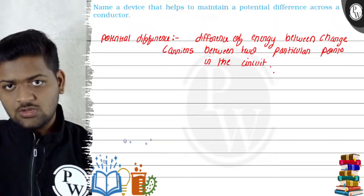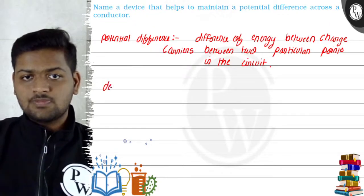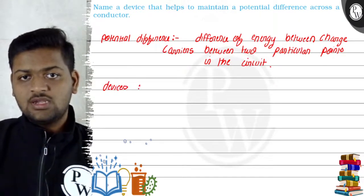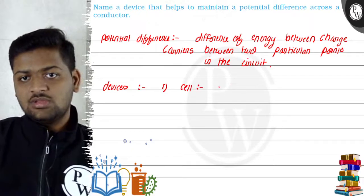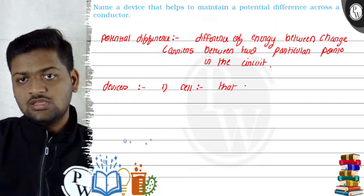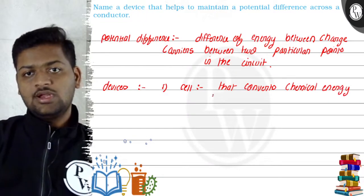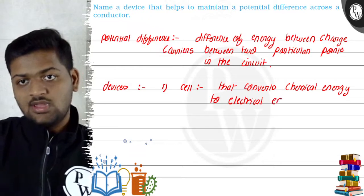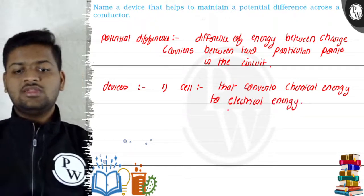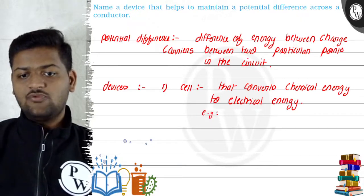Electrons and protons are charge carriers, and we will focus on electrons. Now, coming back to our main question — the devices that help to maintain a potential difference. The first is a cell. A cell is a device that converts chemical energy to electrical energy. An example would be a fuel cell.